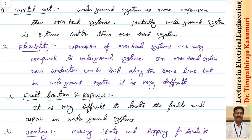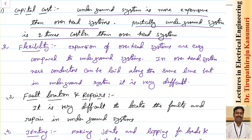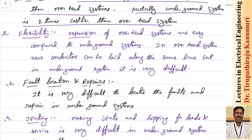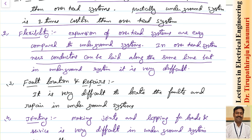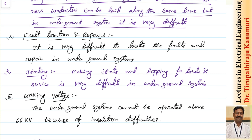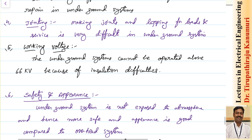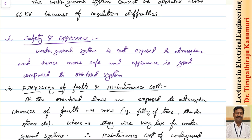Summary of what we have discussed: First, capital cost — underground cables are more expensive than overhead systems; practically the underground system is two times costlier than the overhead system. Second, flexibility — expansion of overhead systems is easy compared to underground; in overhead systems a new conductor can be laid along the same line, but in underground systems it is very difficult. Third, fault location and repairs — it is very difficult to locate faults and repair in underground systems. Joints and tappings are also very difficult in underground systems.